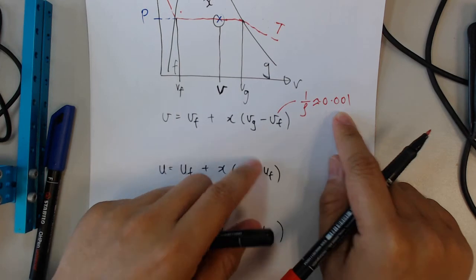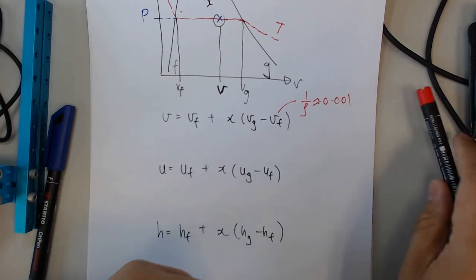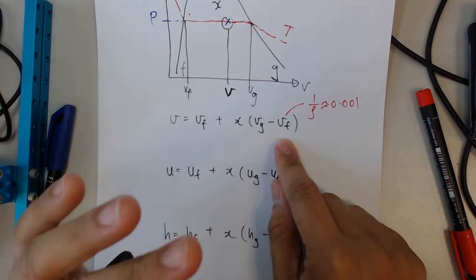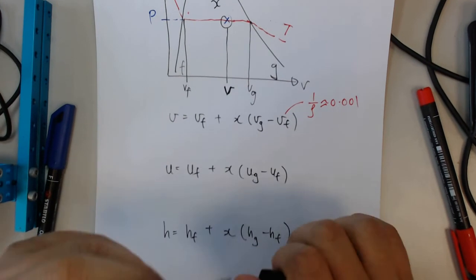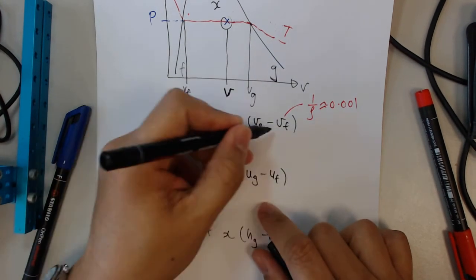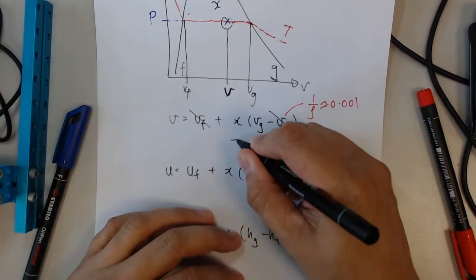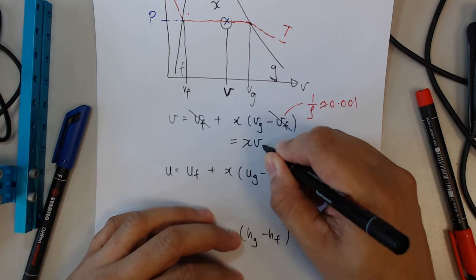So in this case, you can actually assume that the Vf's are small and negligible. And the equation can then be simplified into X Vg.